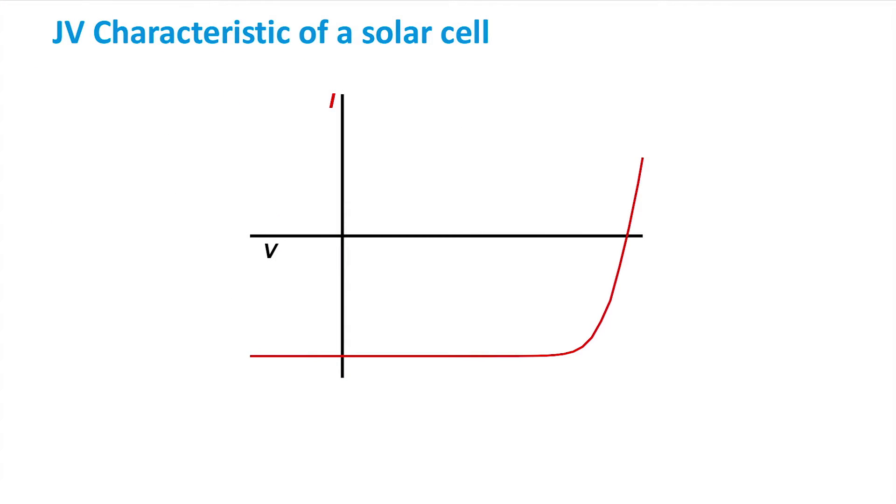Here we can see a typical current versus voltage characteristic of a solar cell under illumination. We will delve further into how to calculate this curve in later videos, but now we can just look at some important parameters of the curve.